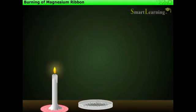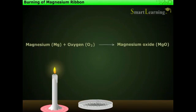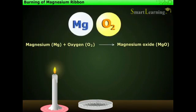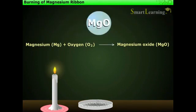This change can be represented by an equation. When magnesium burns in presence of oxygen, it forms magnesium oxide.